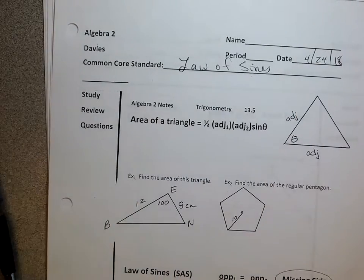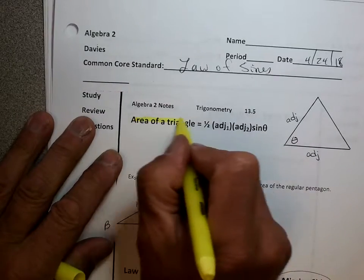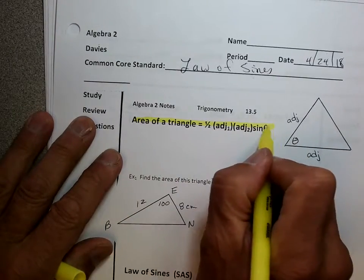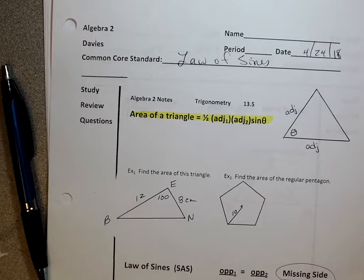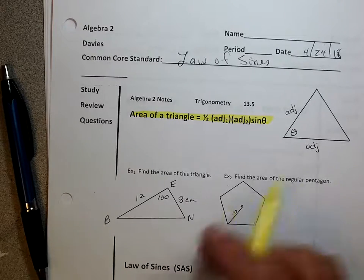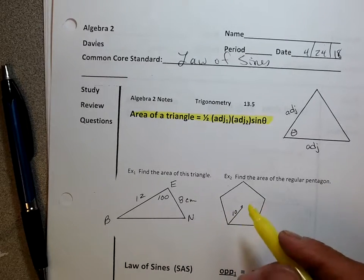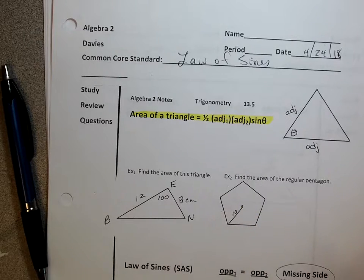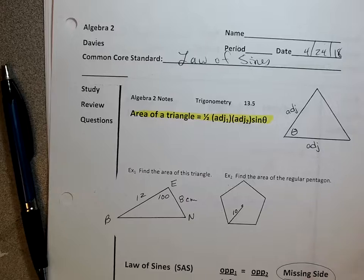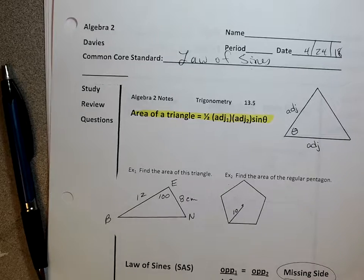I wrote the formulas down for you. Every triangle — there it is. One half times adjacent one, times adjacent two, times the sine of theta. And there's our triangle. Now, there is no hypotenuse, but there are adjacents and opposites, but no hypotenuse because it's not a right triangle.